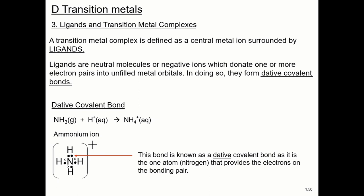The next bit in our transition metals, we're going to have a look at things called ligands and our transition metal complexes. A transition metal complex, the definition here is a central metal ion surrounded by ligands.